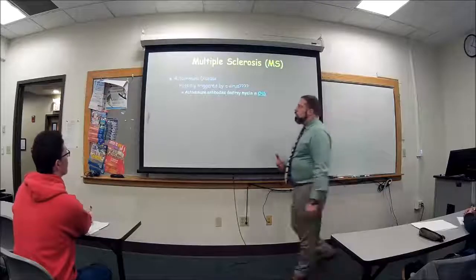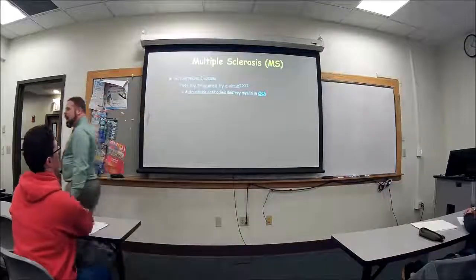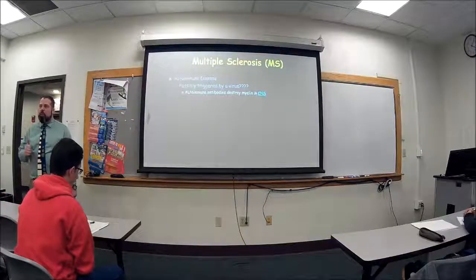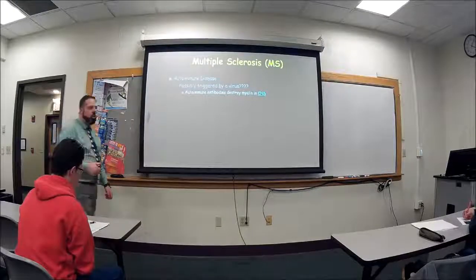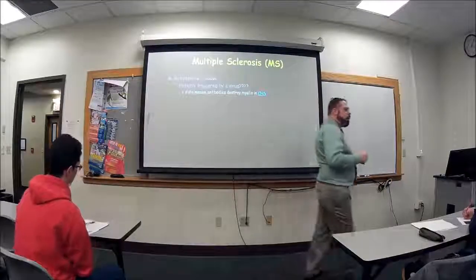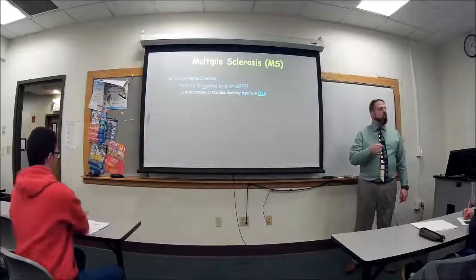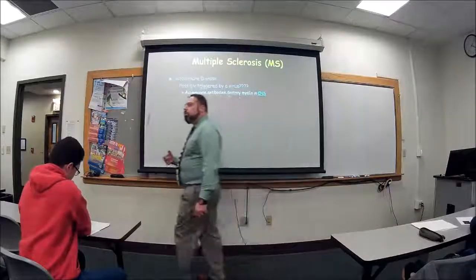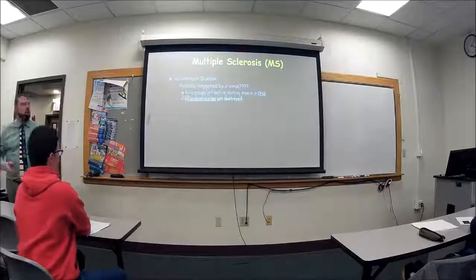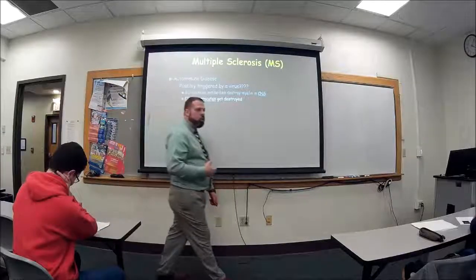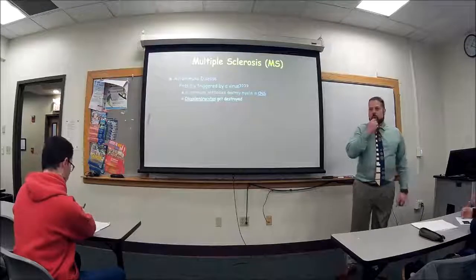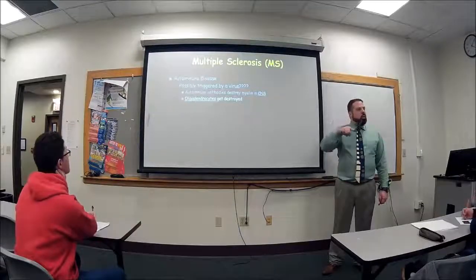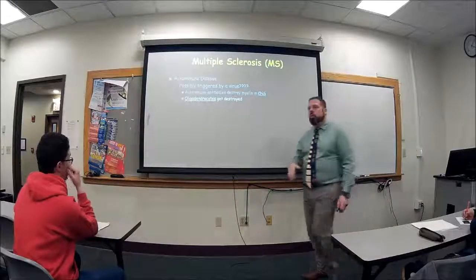It's an autoimmune disease that builds antibodies to attack myelin in the central nervous system — not the peripheral nervous system. Myelin in the central nervous system is made by oligodendrocytes, while myelin in the peripheral nervous system is made by Schwann cells. In MS, it's the oligodendrocytes that are getting destroyed. As more and more scar tissue builds up on the neuron, it starts pressing down and destroying the neuron itself.